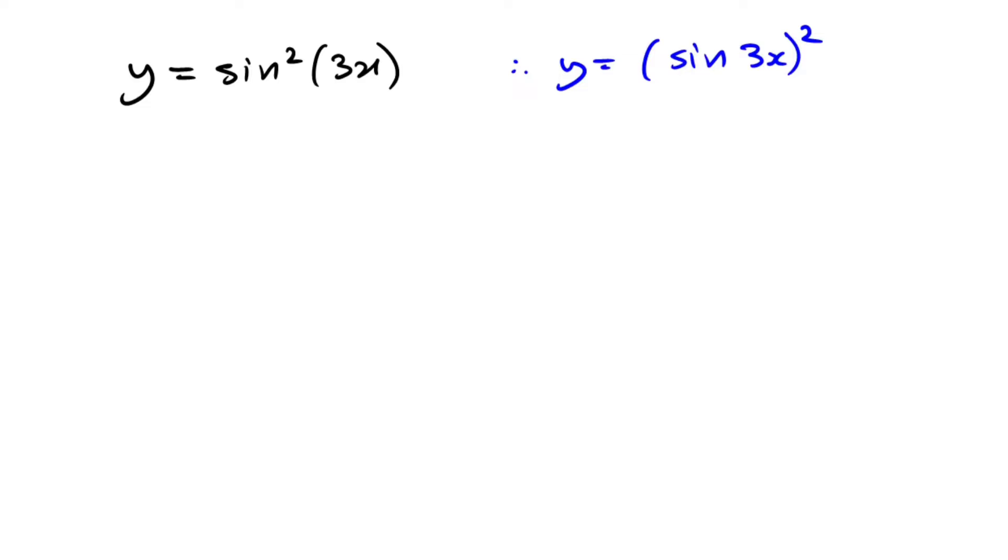Now the reason why we do this is because we want to use the chain rule, and that way we can let all of the inside bit be U. So let's do it. Let U equal sine 3x. Now this means that the Y equation is just, because all of that is U, it's just going to be U to the power of 2. That's it.